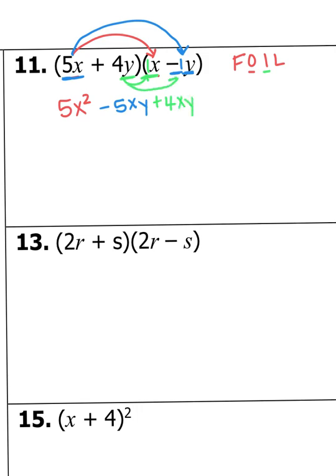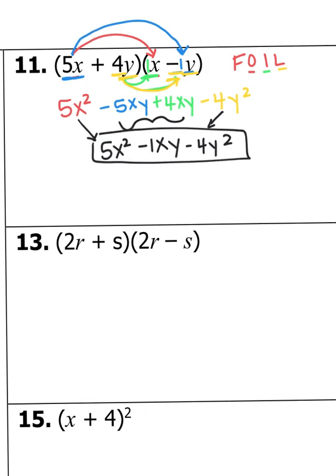Then Inside: 4Y times X — 4 times 1 is 4, and X times Y just makes XY, so 4XY. Then Last: 4Y times negative Y — 4 times negative 1 is negative 4, and Y times Y makes Y squared, so negative 4Y squared. Combine the middle: negative 5XY plus 4XY makes negative XY. So the answer is 5X squared minus XY minus 4Y squared.